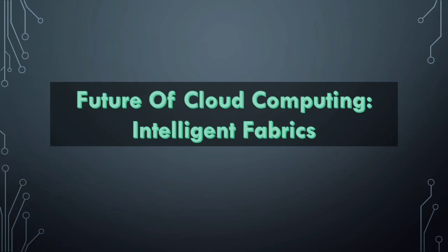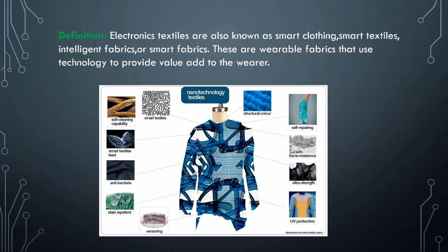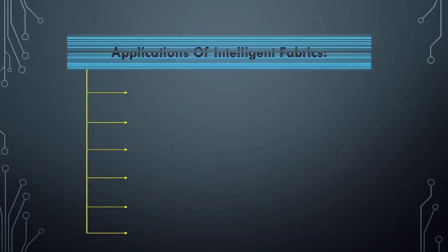Welcome back to my channel. Today's topic is intelligent fabric, under the topic of future of cloud computing. Electronic textiles are also known as smart clothing, smart textile, intelligent fabrics, or smart fabrics. These are wearable fabrics that use technology to provide value-add to the wearer. They are specially designed to provide additional value — they can change environmental or body conditions and appropriately communicate, change, or behave in a programmed manner.